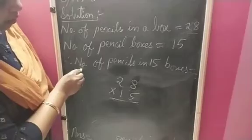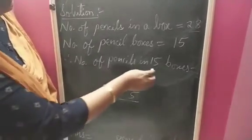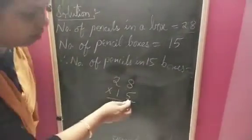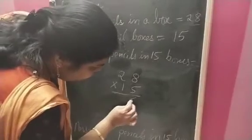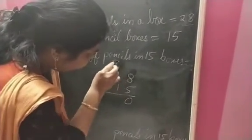So, therefore, number of pencils in 15 boxes. 5 times 8 is 40, write 0, carry over 4.